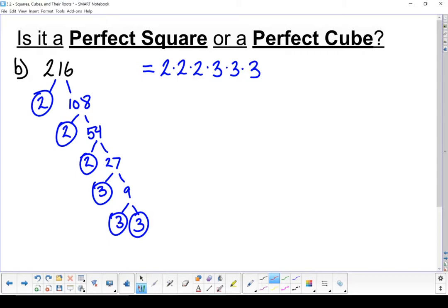If it's a perfect square, I can break things up into groups of two. I've got three twos. So if I start breaking things up into groups of two, I'm going to have a leftover factor of two. So it can't be a perfect square.